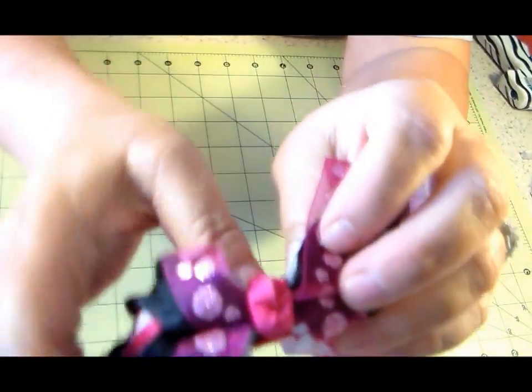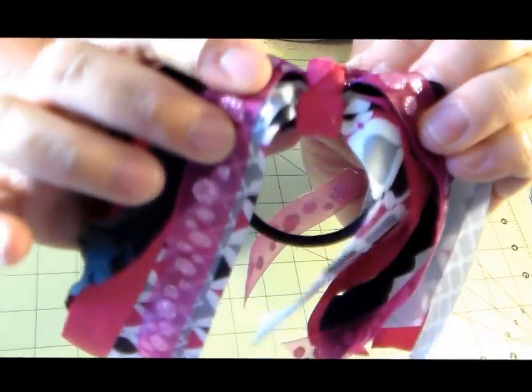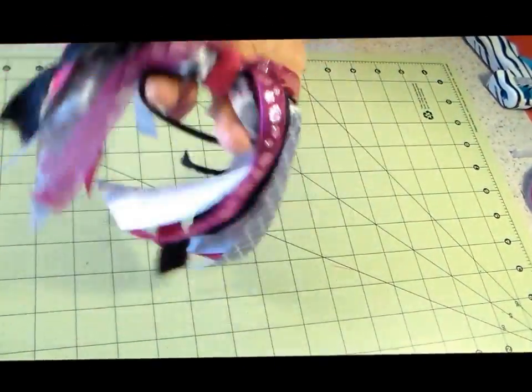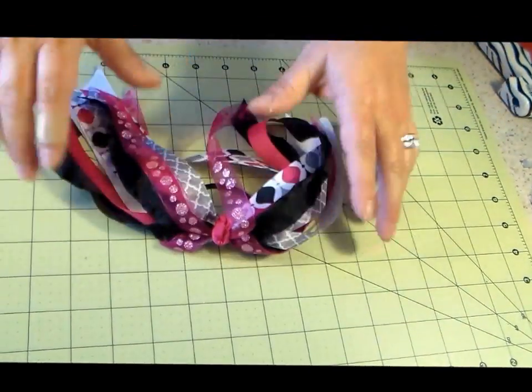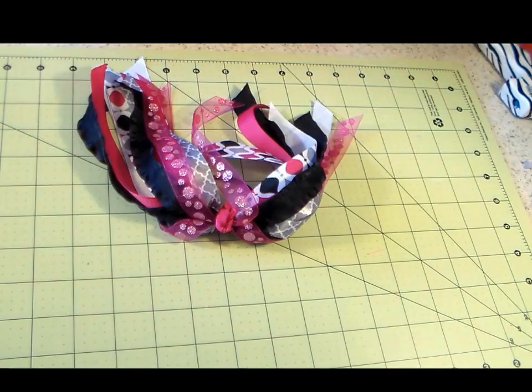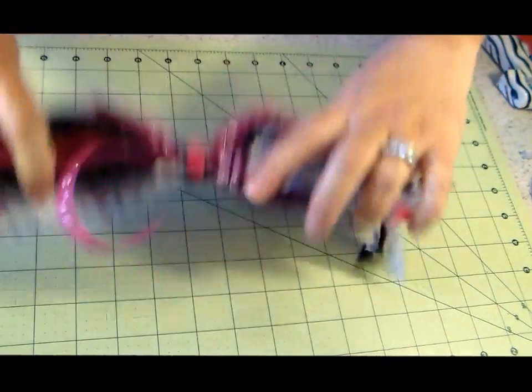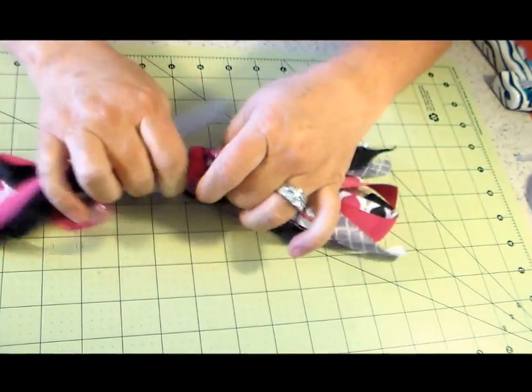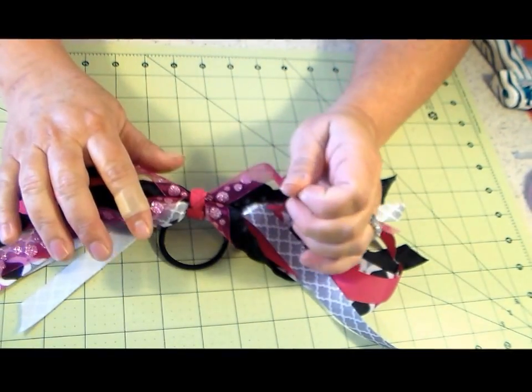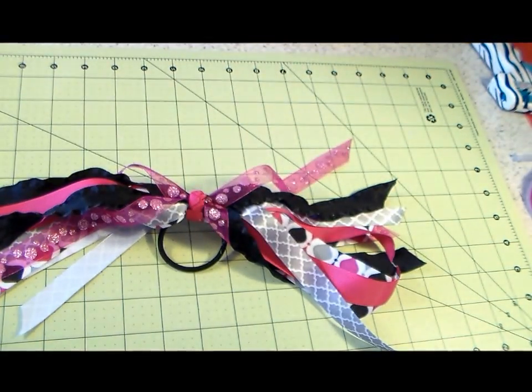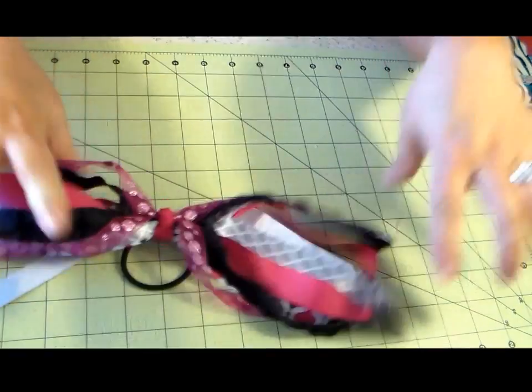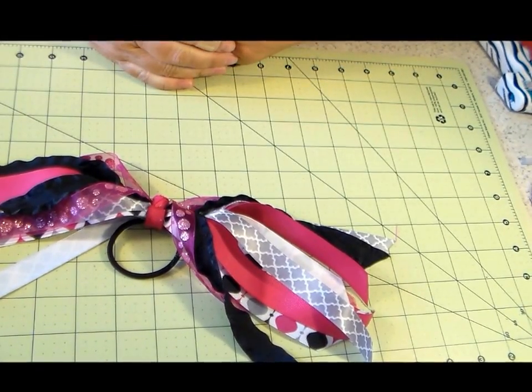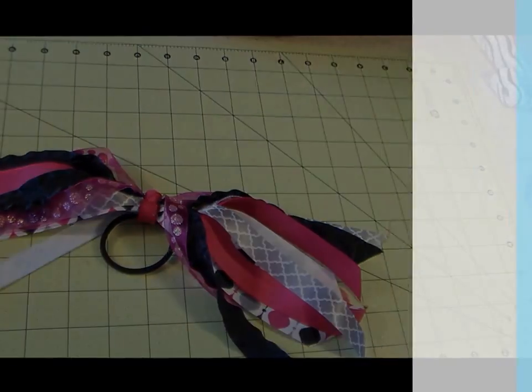There it is. So you have your knot and then your ponytail holder on the back. So that is how you make it. And it is secure. I mean, you can tug, you can. So those of you that are making them for cheerleaders, they will be very durable. Now if you don't have a sewing machine, I suppose you could hand sew it. It's just going to take you longer. So that's the Pony Oboe. So if you have any questions, feel free to leave comments below and I will try to get you answered. Thanks for watching.